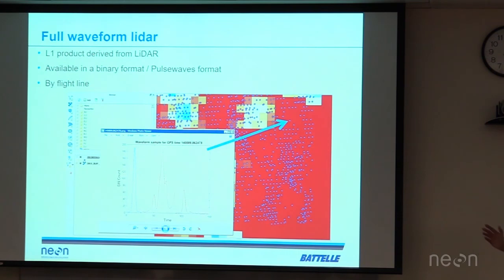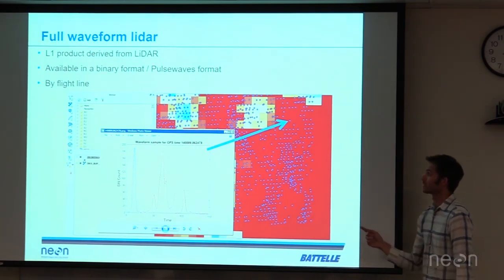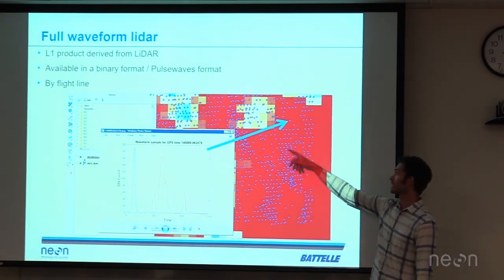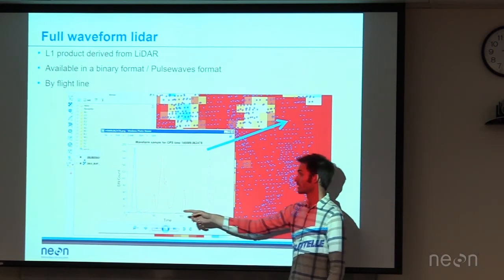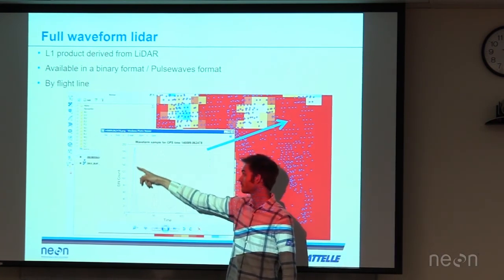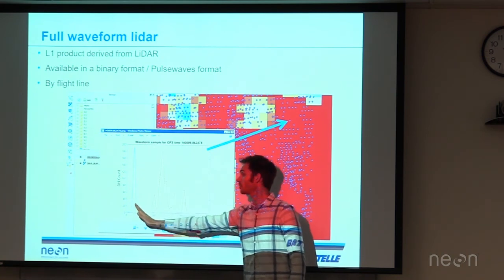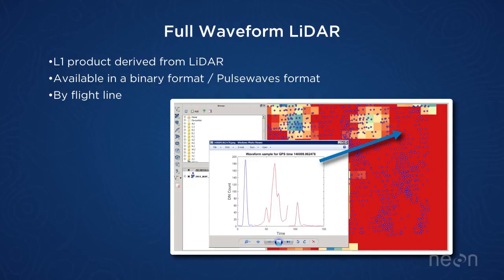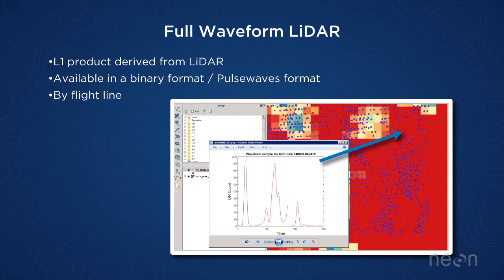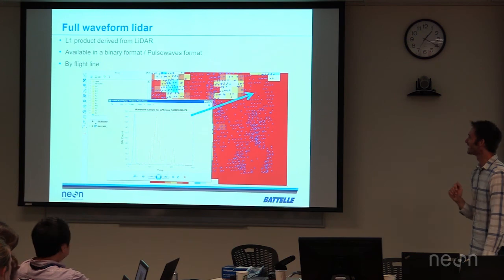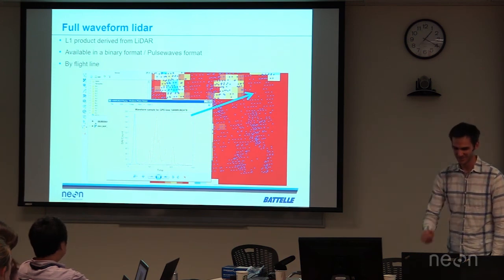The final product is the full waveform LiDAR product. You can see points taken over the canopy height model, and if you look at one individual point, you have the outgoing waveform and then after some time — around 6,000 nanoseconds — you get the return pulse. Keith is going to give a presentation on waveform LiDAR next.